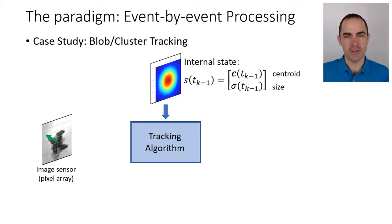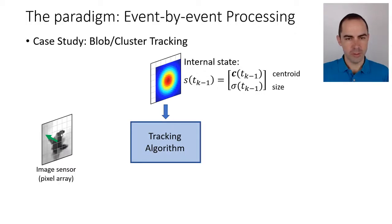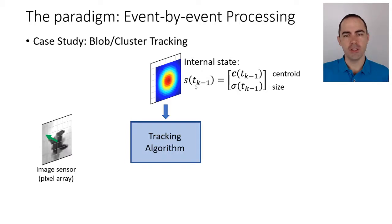It's important to understand this change of paradigm: we are not processing images, we are processing events one by one. Imagine a scene on the left — there is a person moving towards the left. This is the pixel array sensor. At some point — forget initialization for now — at time t_{k-1} we have an internal state, which could be given or built from past events.